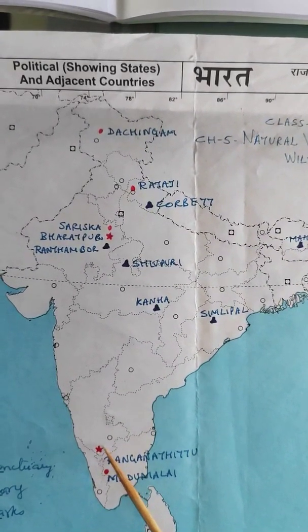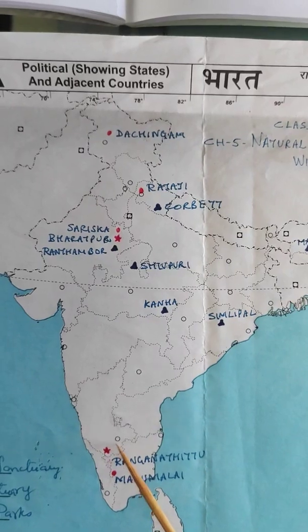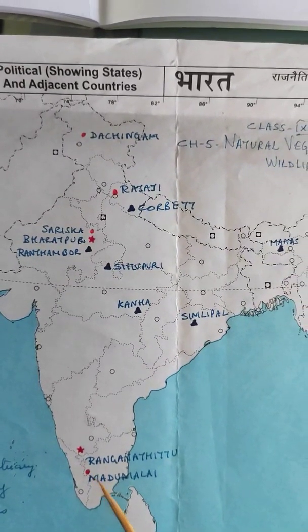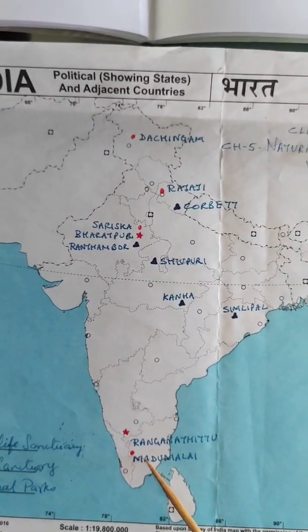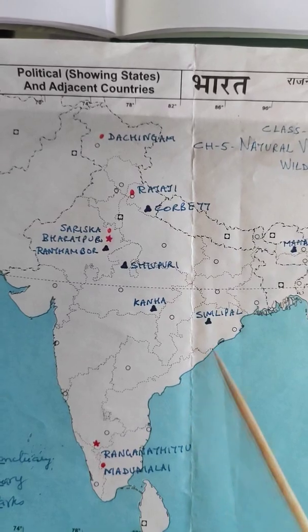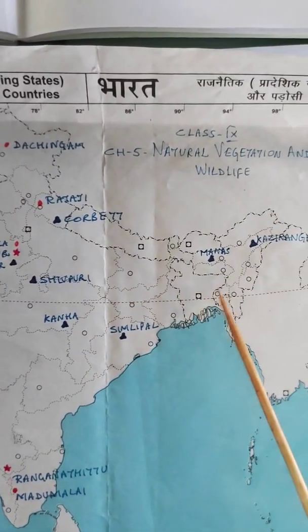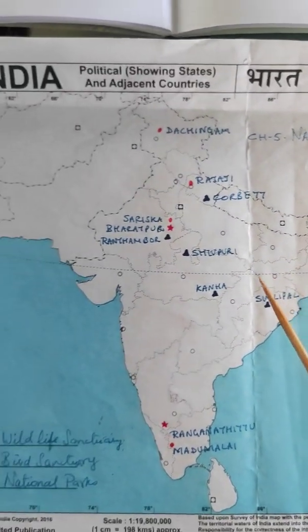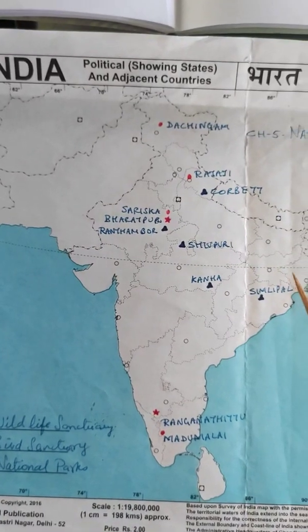Then you have Mudumalai, which is a wildlife sanctuary. Simlipal, Kanha, Shivpuri, Manas, and Kaziranga are all national parks.